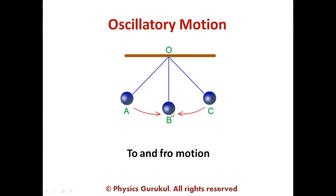The bob starts at position A. From here we release it, so it moves towards the mean position. From there, due to gain in velocity, it moves a little further and finally stops at position C. The motion is to and fro — because at every point between A and B, the velocity direction is downward (tangential), and coming back from C, the velocity direction changes. So the motion is to and fro at every point — displacement, velocity, and acceleration all change direction and become opposite.